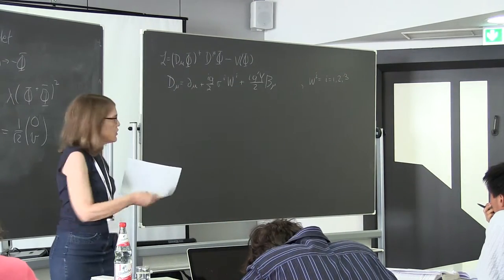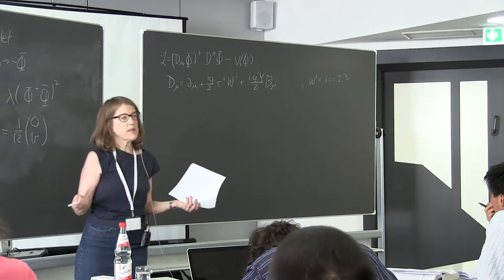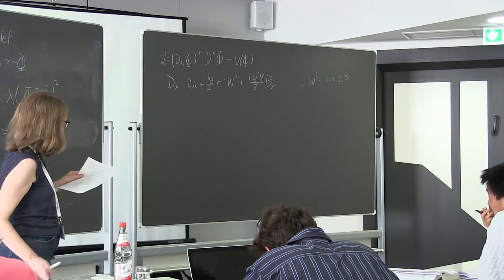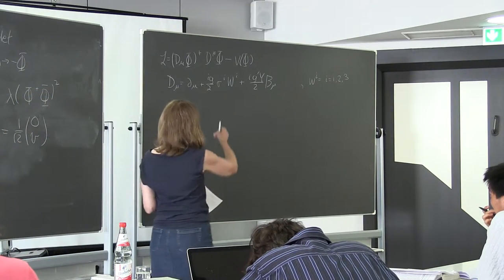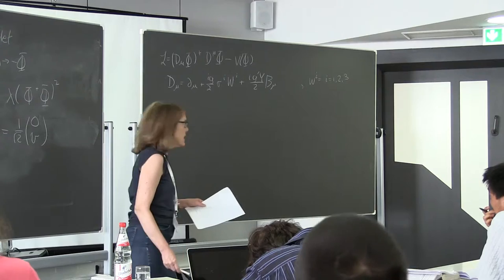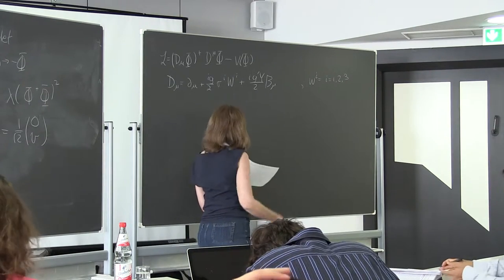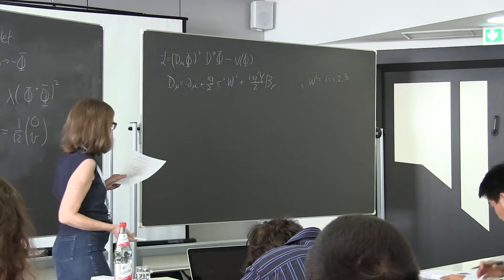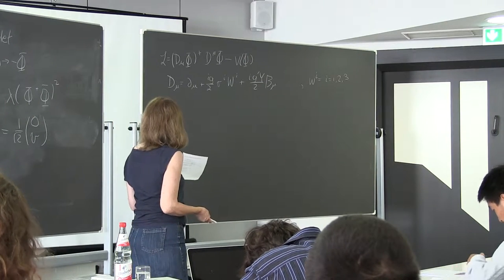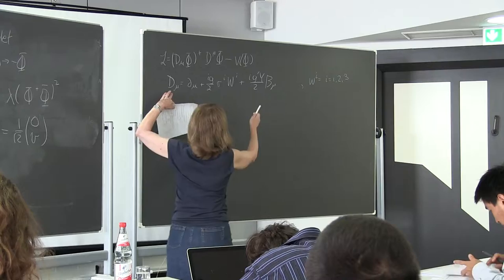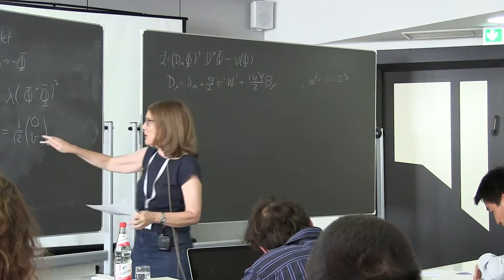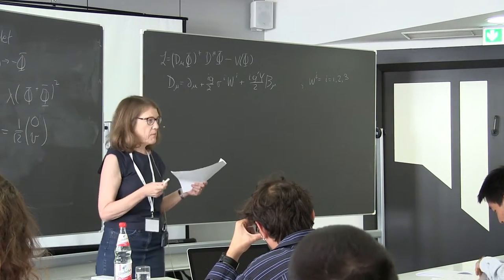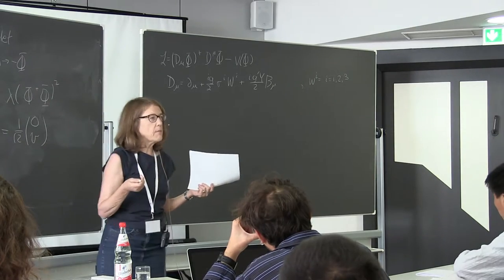For some reason, we always use W for the SU(2) gauge fields before symmetry breaking and again for the physical fields after — it's bad notation but it's the way people always do things. Y here I'll explain in a second; for now you can think of it as just an arbitrary coupling to the U(1) gauge field. Just like before, you put this into the Lagrangian, minimize the potential, and multiply everything out. I encourage you to do that on a piece of paper to find the W and Z masses.